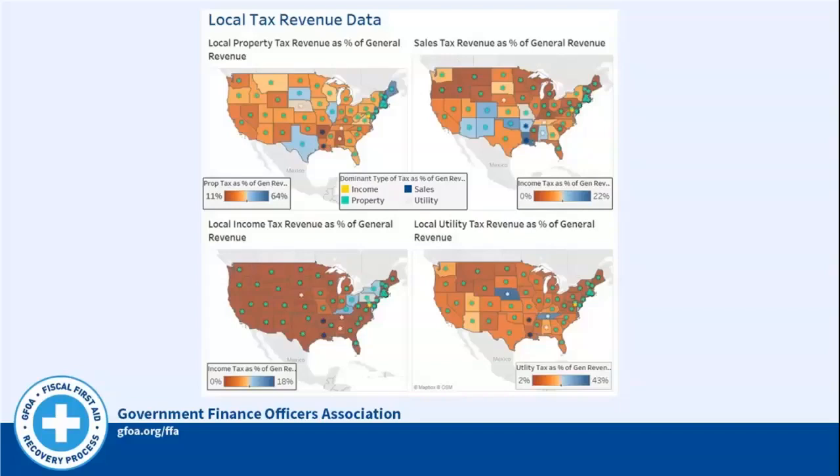The heat map shows what percentage of general revenue comes from local income tax. You can see a strong band from Kentucky all the way up to New York. Some property tax states in the upper right often correspond to having lower sales tax. The entertainment desert southwest heavily relies on sales tax, as does Louisiana and New Orleans. Nebraska and Tennessee stand out as heavily utilizing utility revenue. Understanding revenue sources is going to be more crucial than ever as finance officers deal with unprecedented times in most of our careers.